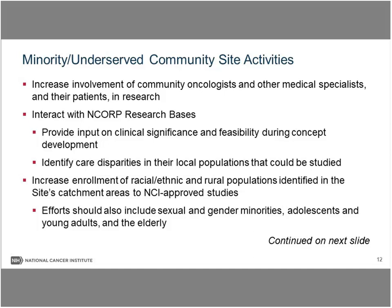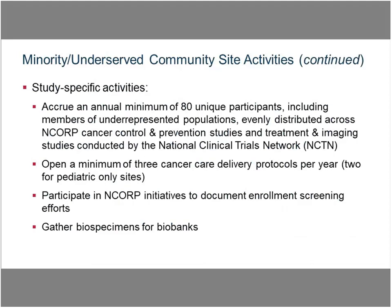Sites should increase enrollment of racial, ethnic, and rural populations in their catchment areas, and efforts should also include sexual and gender minorities, adolescents and young adults, and the elderly. The accrual minimum is 80 unique participants, with the population you are serving represented — ideally as close to 50-50 as possible. NCI will provide an estimate for unique participants by credit for cancer control, prevention, and treatment, equally distributed across program sites.